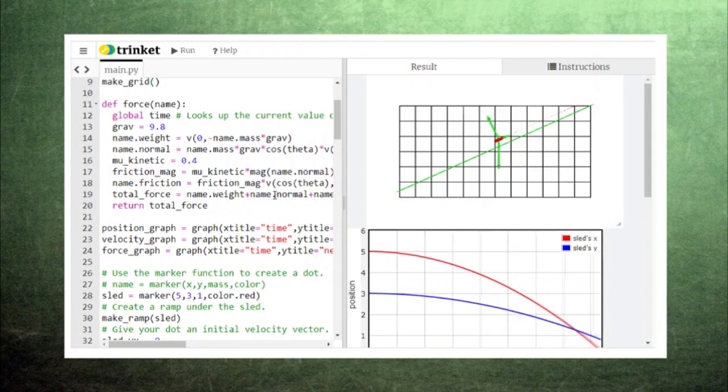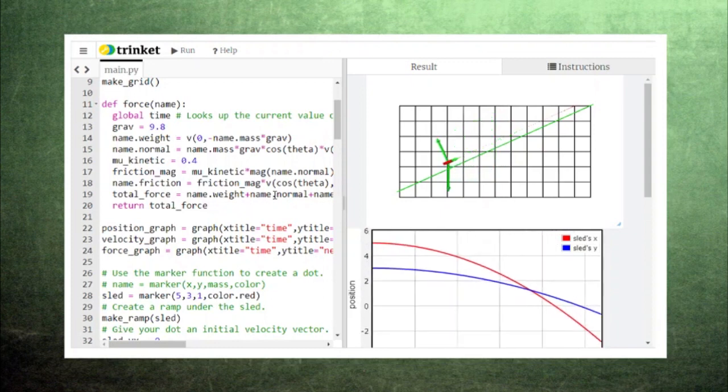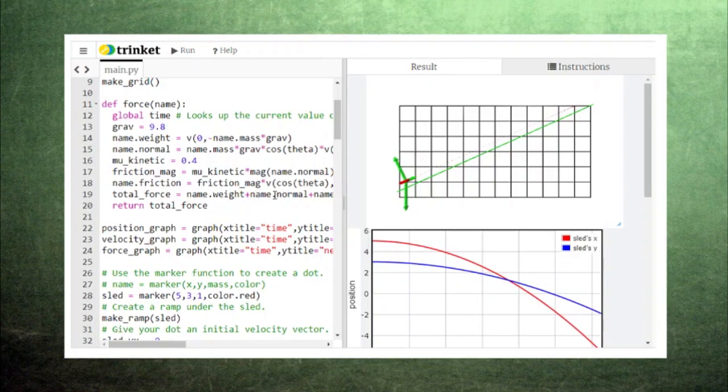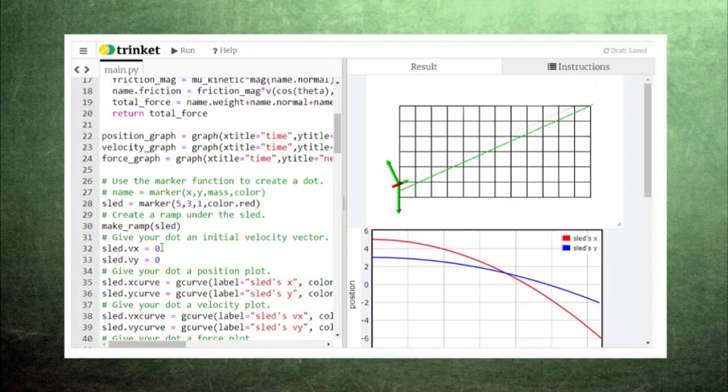In this new version of the code, we've added arrows to represent the three forces on the sled, just like in our free body diagram. Notice that if we make the coefficient of friction stronger, we could end up with friction overpowering the weight, and the sled will slow down.